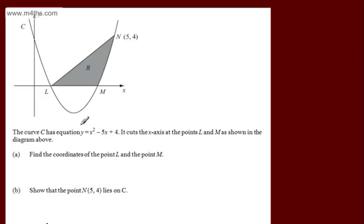This is our third video looking at using integration to find the area trapped between a curve and the x-axis. In the first question, we're told the curve C has equation y equals x squared minus 5x plus 4. It cuts the x-axis at the points L and M as shown in the diagram above. In part A, we need to find the coordinates of the points L and M.